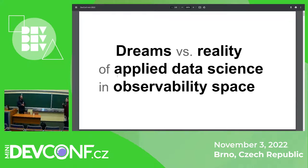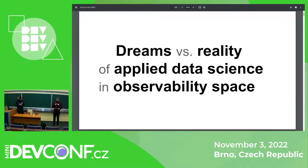Let's start with the presentation. We have Ivan Nechas, who is a software architect at Red Hat. The topic will be Dreams vs. Reality of Applied Data Science in Observability.